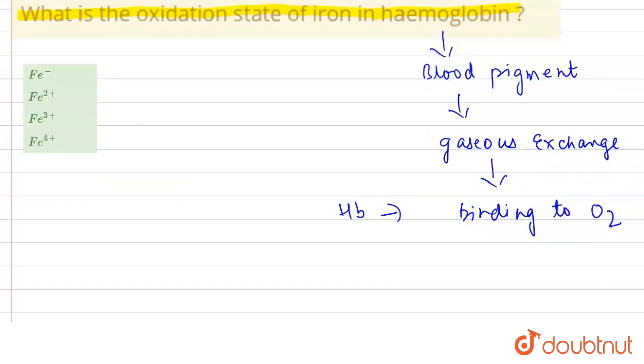Now in hemoglobin, there is the presence of iron. The iron which is present in hemoglobin is actually in the +2 oxidation state. That means Fe²⁺ iron is present in hemoglobin.